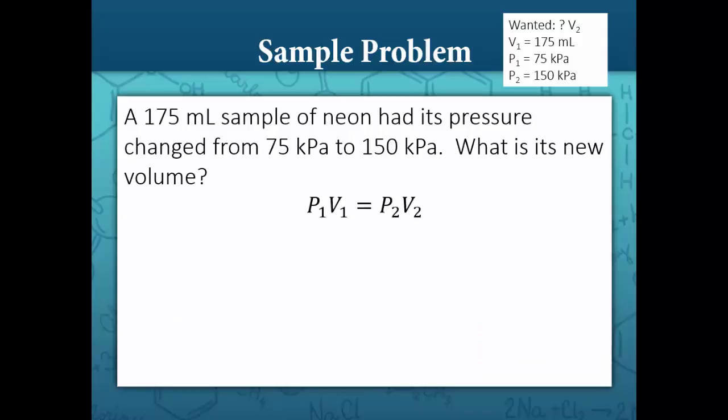This is our Boyle's law equation, P1 V1 equals P2 V2. We want the new volume, so we're solving for V2. To isolate the variable, we're going to divide the right-hand side by P2, and we'll do that to the left-hand side as well. P2 cancels out on the right-hand side, and our equation becomes V2 equals P1 V1 over P2.